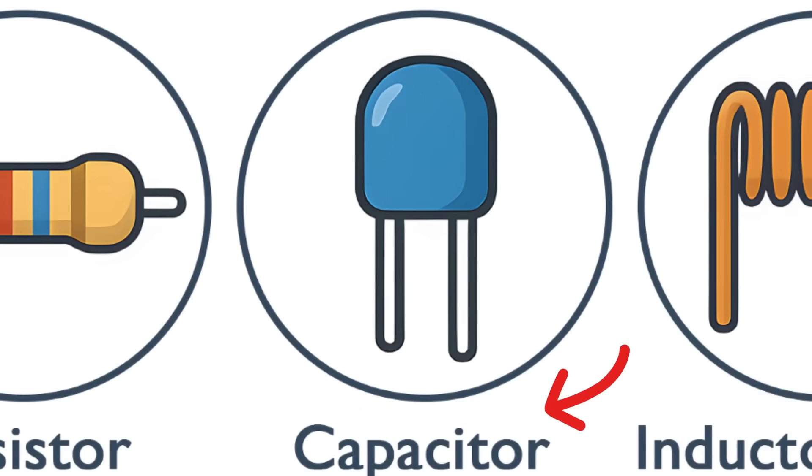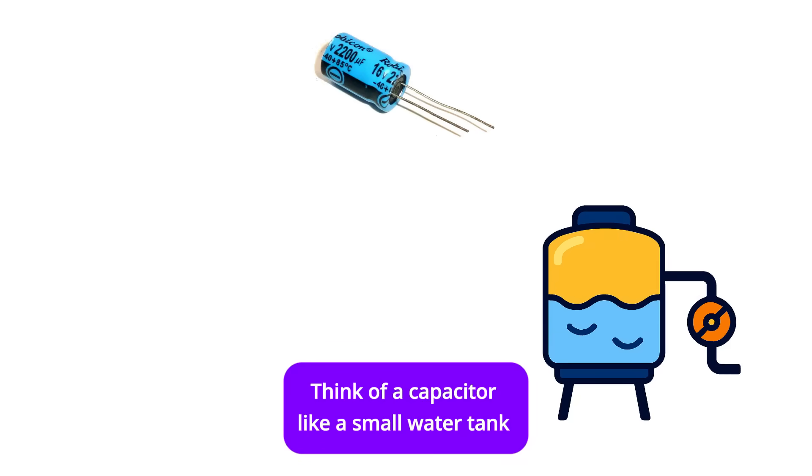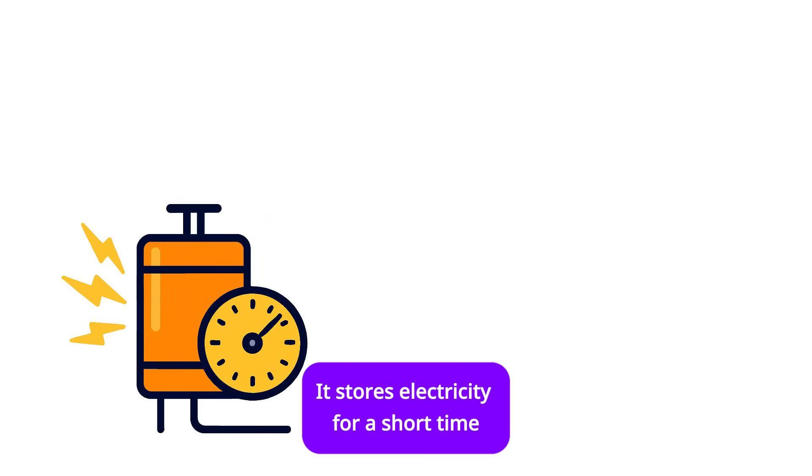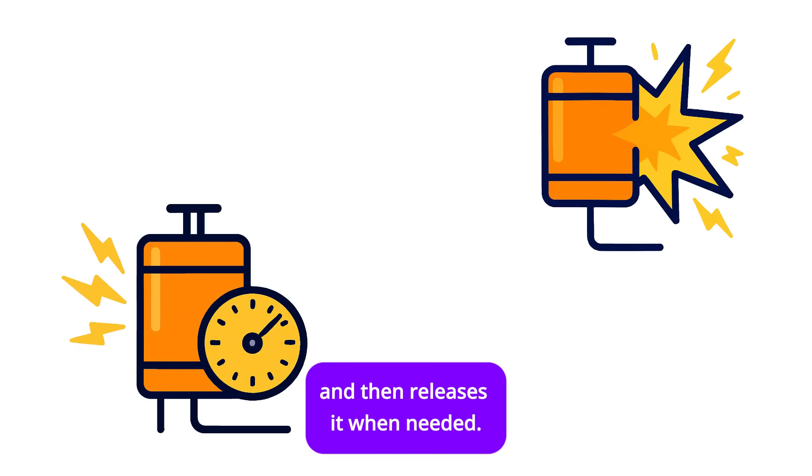Capacitor. Think of the capacitor like a small water tank or a temporary battery. It stores electricity for a short time and then releases it when needed.